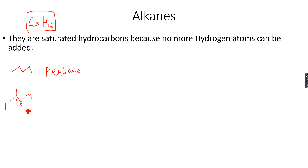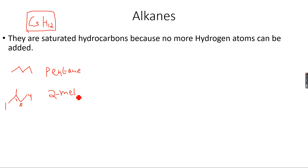Taking 4 gives us the longest chain, and therefore we can conclude that there is a methyl group — a CH3 group — attached to the second carbon atom. So this becomes 2-methylbutane.